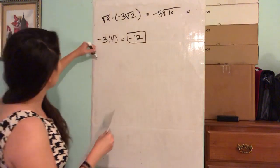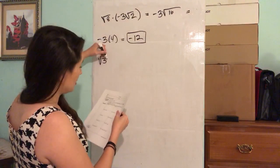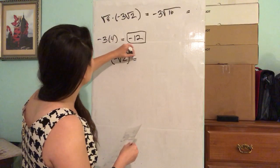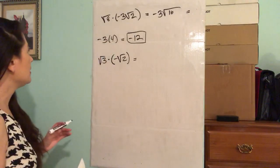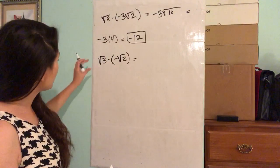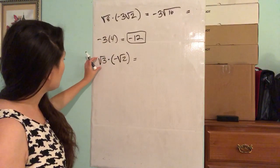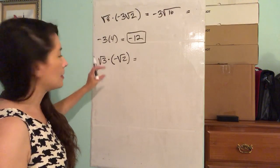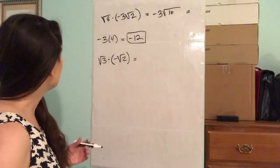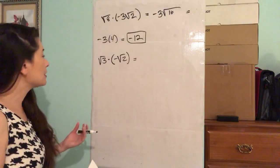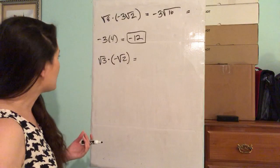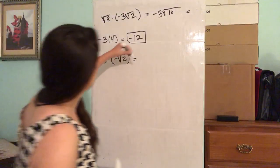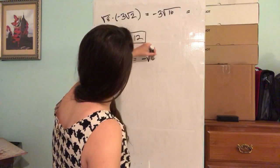How about square root of three times negative square root of two? Again, we're going to multiply and combine terms that are underneath a radical — underneath the same degree of radical. They're both underneath the square root, so we can multiply them together; we can multiply the values and just keep them under the root. So this is going to be negative square root of six.